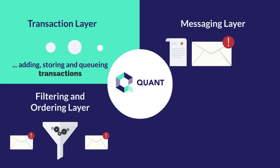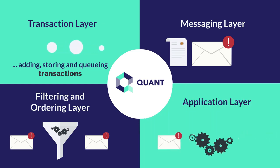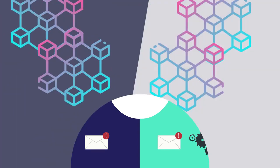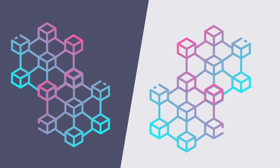And number four, the application layer, or the layer responsible for allowing validated messages to generate changes for one application or another. Here, multi-chain applications are essentially isolated from one another.